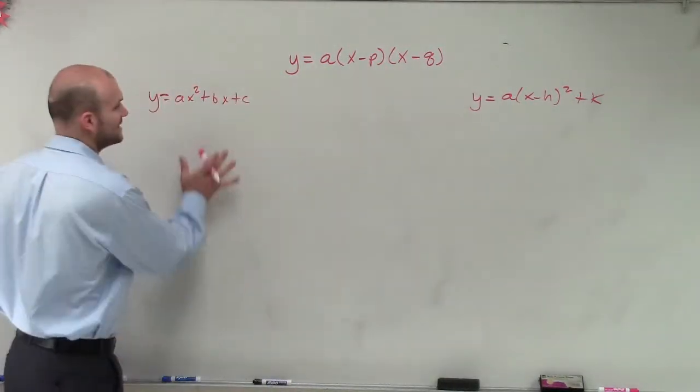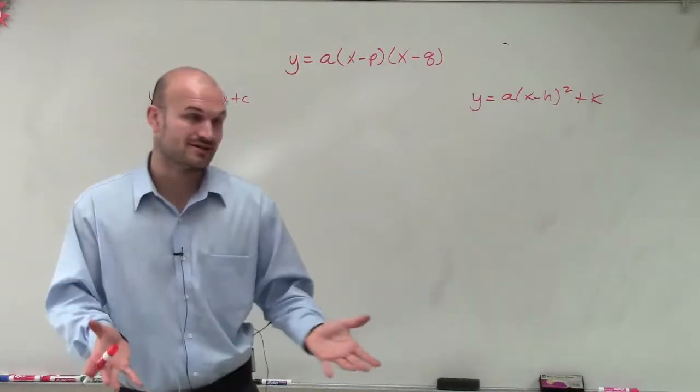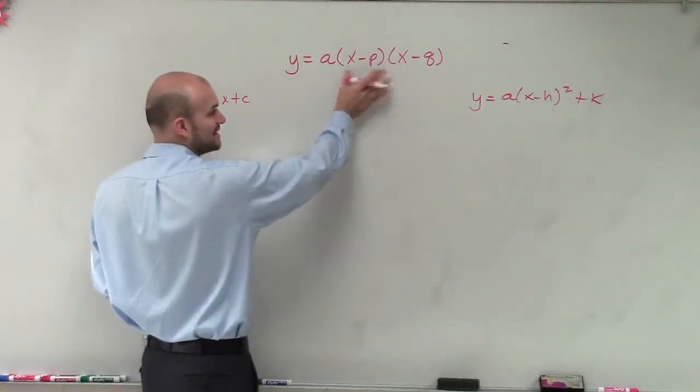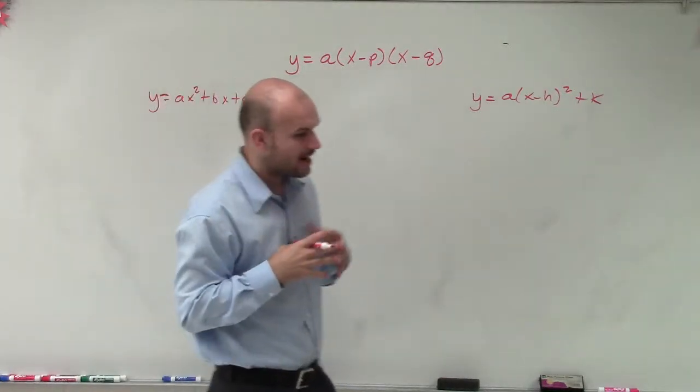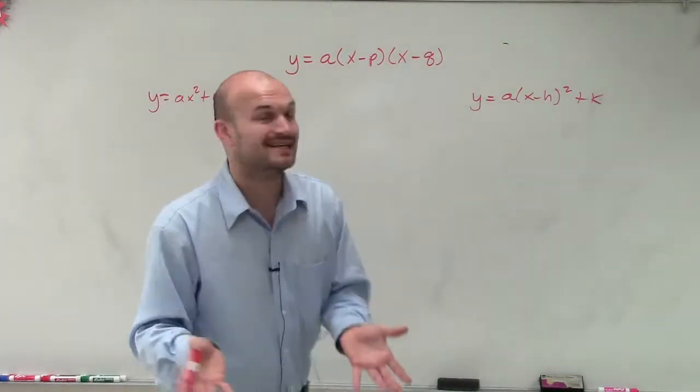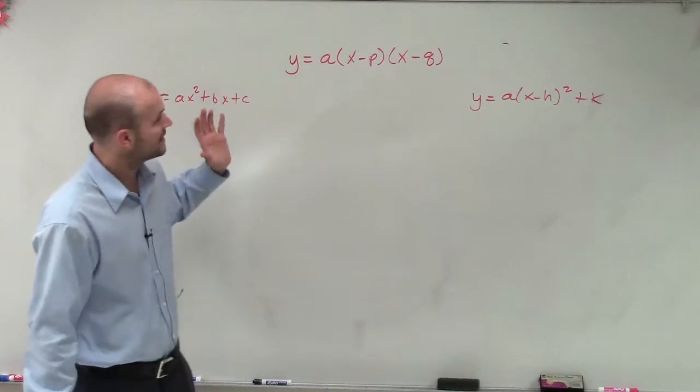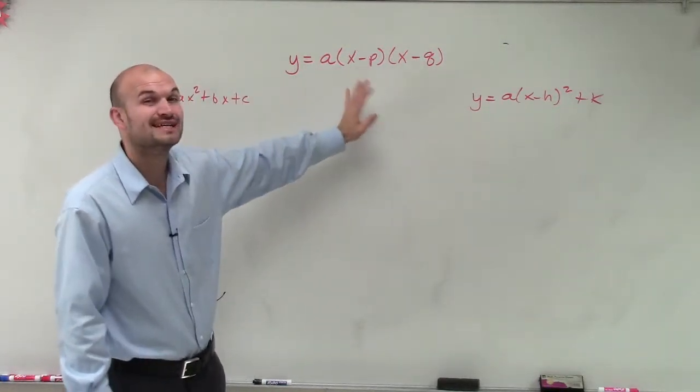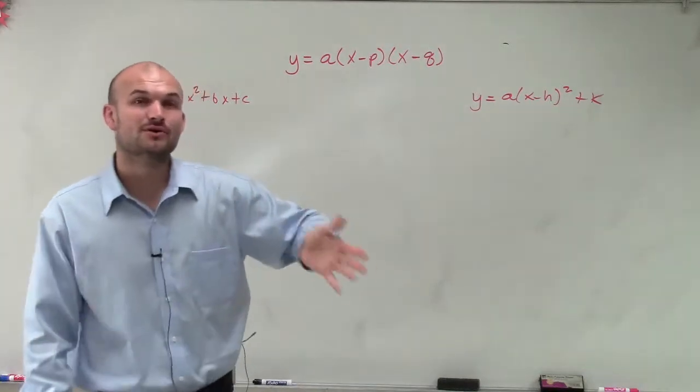A lot of times when we're given a quadratic and we want to find the zeros, we want to take a standard form and factor it so it's in this form. However, when we're looking for, let's say I get a quadratic and I either factor it, I either put it in intercept form, or it's already given intercept form, how am I going to now be able to determine what the axis of symmetry is and the vertex.